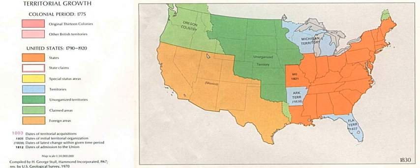In 1858, the western part of the Minnesota Territory became unorganized when it was not included in the new state of Minnesota. This area was organized in 1861 as part of the Dakota Territory. On May 2, 1890, the western half of the Indian Territory was organized as Oklahoma. The remainder was incorporated into the state of Oklahoma upon its admission to the Union in 1907. Alaska was an unorganized territory between its acquisition by the United States in 1867 and the creation of the Alaska Territory in 1912.